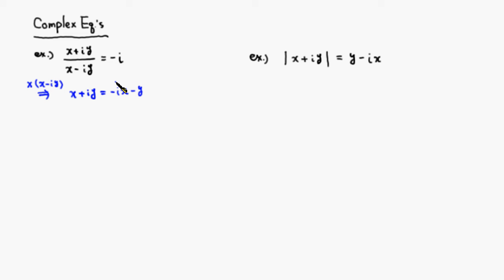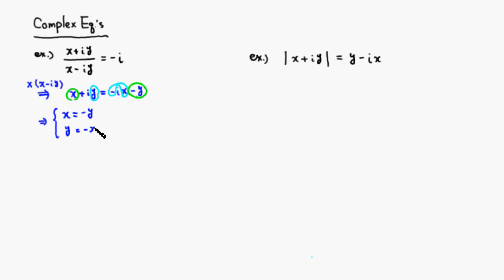Then by comparing the real parts: the real part on the left-hand side is x, and the real part on the right-hand side is -y. So x = -y. Then comparing imaginary parts on the left and right, we get y = -x. But notice these two equations are equivalent — multiplying the top equation by -1 gives the second. So y = -x.